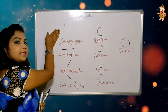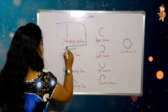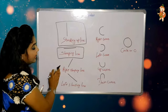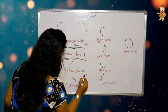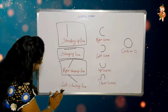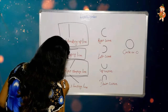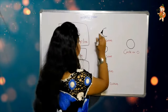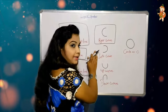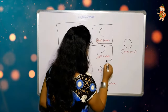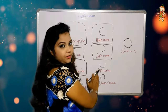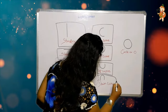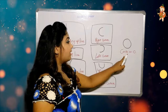Let's revise. This one is a standing up line. This one is a sleeping line. This one is a right slanting line, and this one is a left slanting line. This one is a right curve. This one is a left curve. This is an up curve, and this is a down curve. And the last one is a circle.